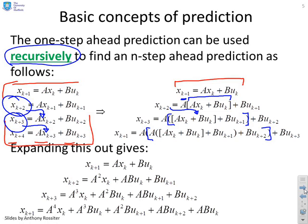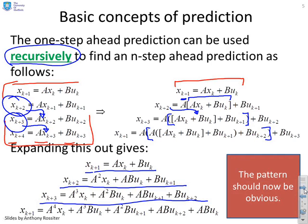If we expand all this out and simplify all the brackets, you'll find this is what you get. x_{k+1} = Ax_k + Bu_k. x_{k+2} = A²x_k + ABu_k + Bu_{k+1}. x_{k+3} = A³x_k + A²Bu_k + ABu_{k+1} + Bu_{k+2}, and so on. You'll see there's clearly a pattern developing here, and you should be able to use recursion or otherwise prove what the general pattern will be.